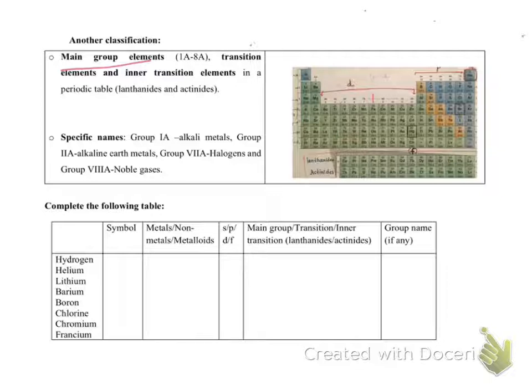These long columns here: 1A, 2A, 3A, 4A, 5A, 6A, 7A, and 8A - these big columns, they are known as main group elements. So there are two columns on the left side and six on the right.